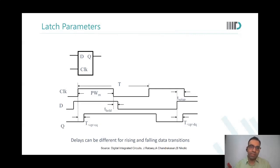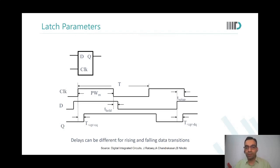If it's a positive level triggered latch, then during the positive pulse period it will be transparent, and during the negative pulse period it will be opaque. So when it goes opaque, what is it sampling — what is it showing as the output? What it has sampled in the positive period of the clock. It may have sampled multiple rises and falls, but what will it show in the low period?